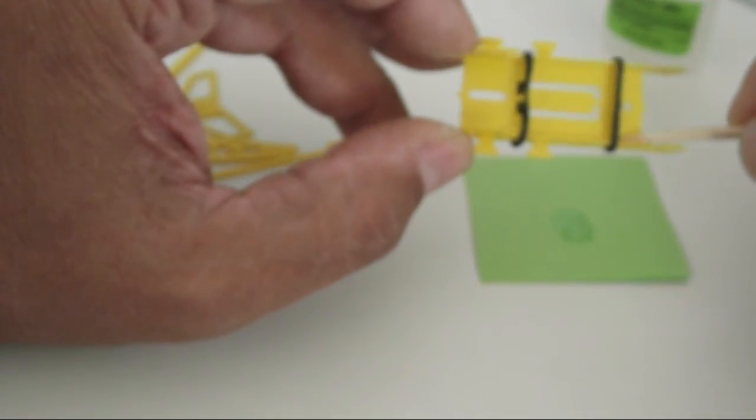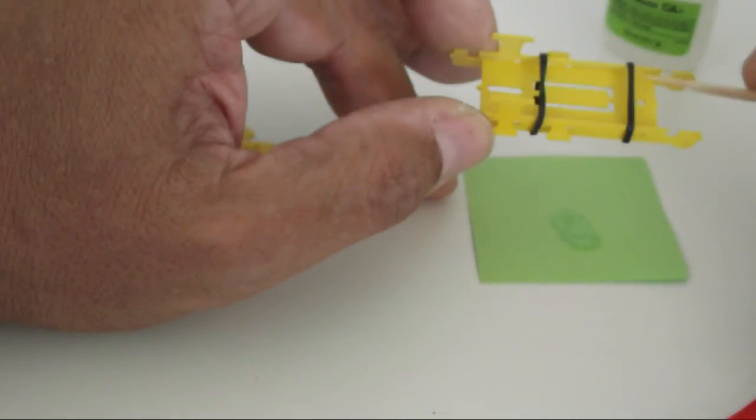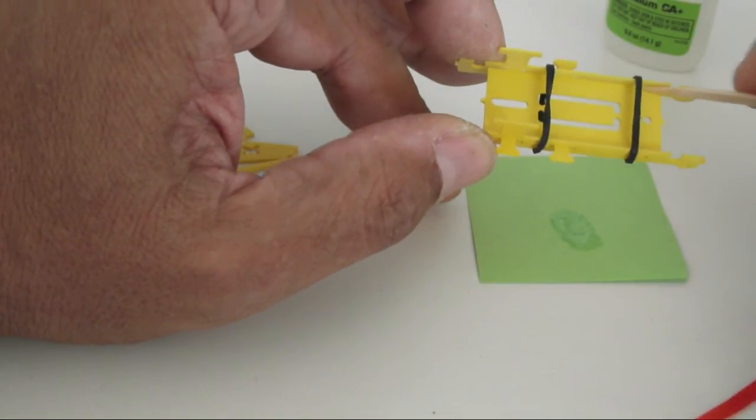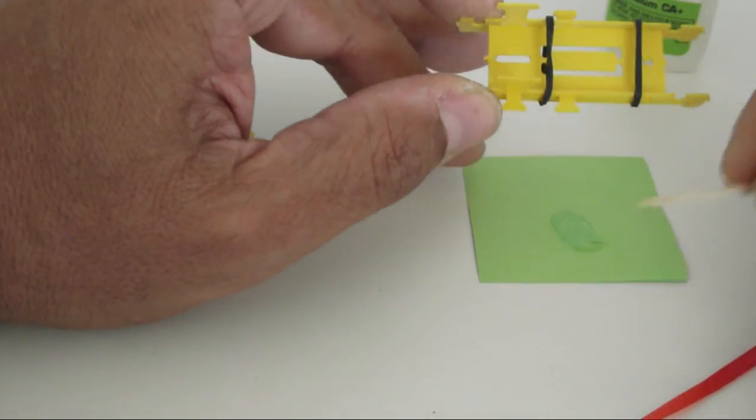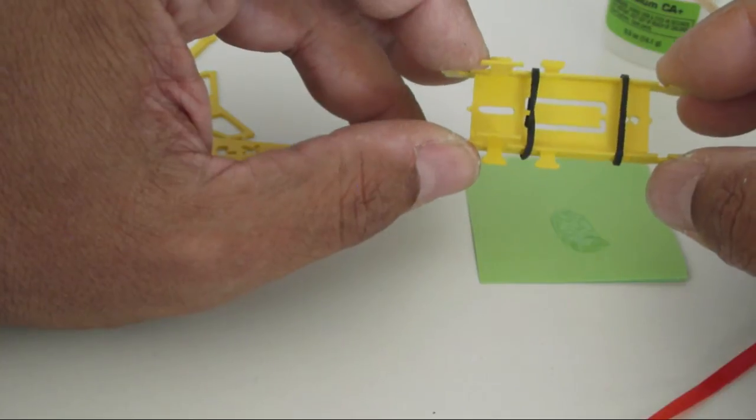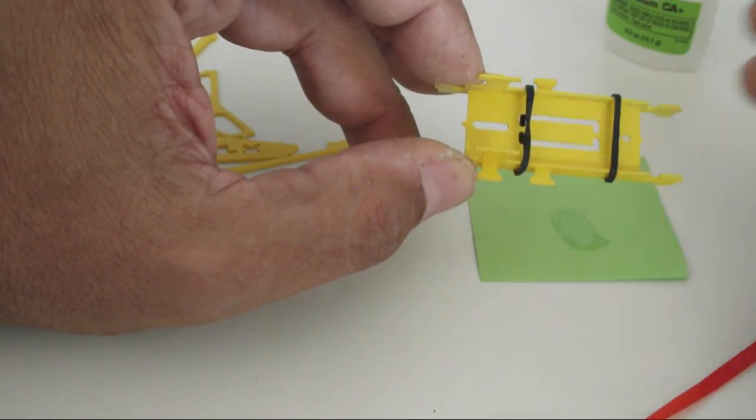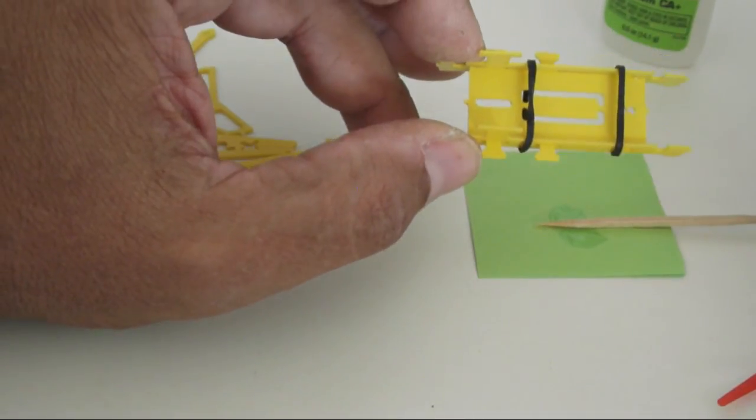Now you can probably do this a lot easier than what I'm doing here because I'm trying to film, talk and assemble at the same time. So it's a little bit challenging. But if you do this at home and you take your time, you should end up with a very nice assembly. So you can do that with the CA glue.